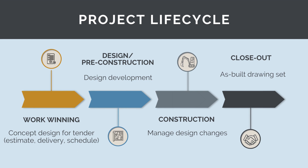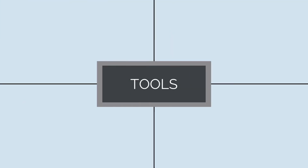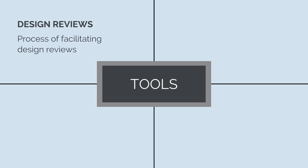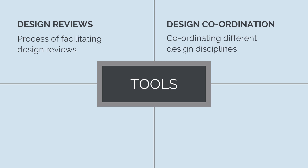To effectively manage the design, there are several tools we need to master, including design reviews. Regular design reviews facilitate collaboration, identify potential design flaws or conflicts, and ensure alignment with project goals. Design coordination — effective coordination among design disciplines, project stakeholders, and contractors — is crucial to integrate various design elements seamlessly.